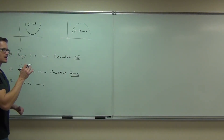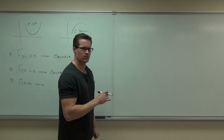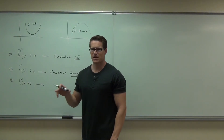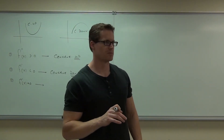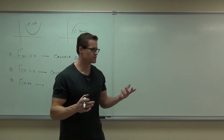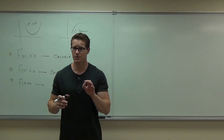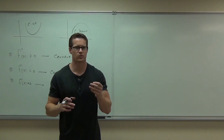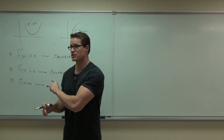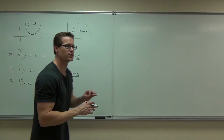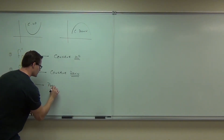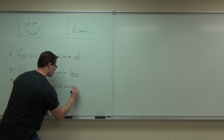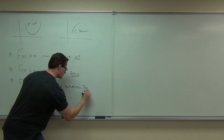What would happen if the second derivative equals zero? Right now we have a question mark about that. If the second derivative equals zero, that means the rate of change of the slope is constant. It could possibly be where it changes from concave up to concave down, or concave down to concave up. That point is called a possible inflection point — or PIP.